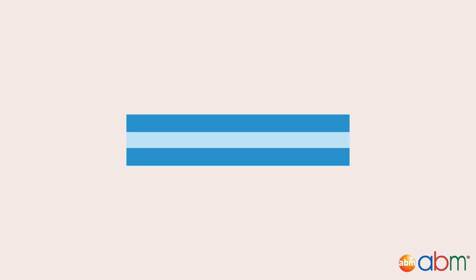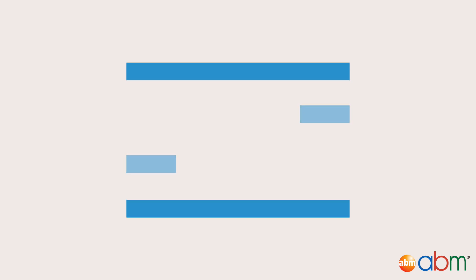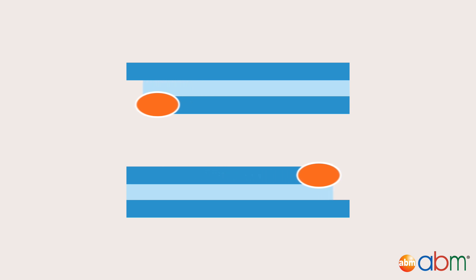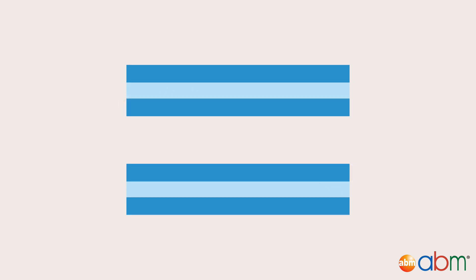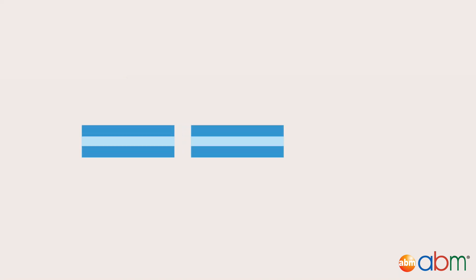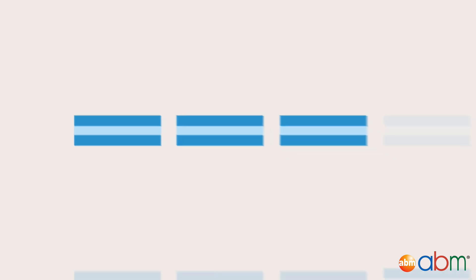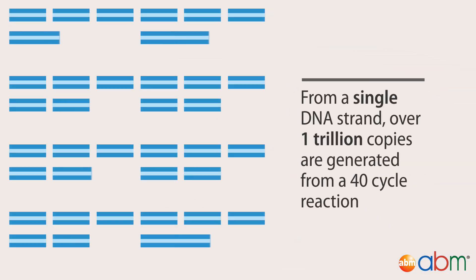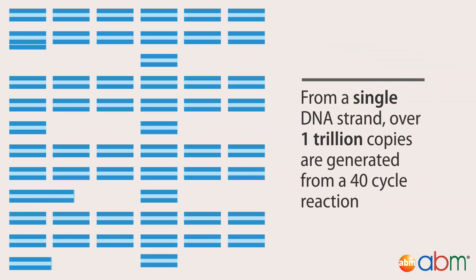PCR depends on a series of 20 to 40 repeated cycles of DNA replication by a DNA polymerase enzyme. After each cycle, the number of DNA strands is doubled, and at the end of a 40-cycle reaction, more than one trillion copies are generated from a single copy of a DNA molecule.